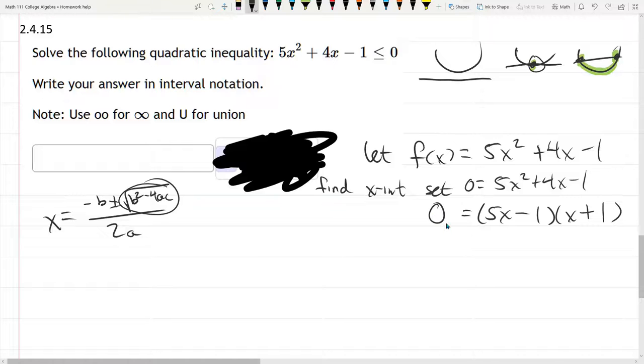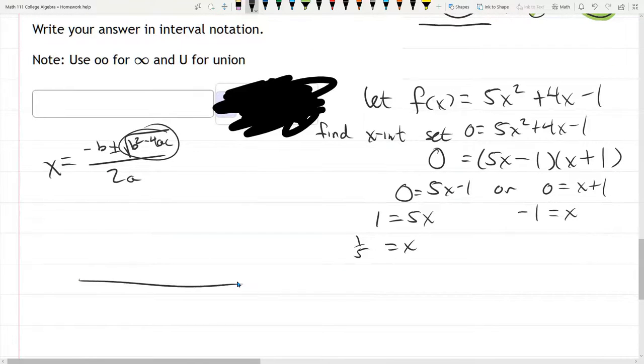All right. I went the factoring route. So the zero product property says that 5x minus 1 equals 0 or x plus 1 equals 0. So solving. Add 1 to both sides. Divide by 5. x equals 1 fifth. The other one. Just subtract 1. Negative 1.